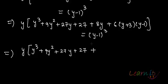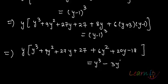when you just multiply inside, you will get 6y^2 + 20y - 18 is equal to y cube minus 3y^2 + 3y minus 1.